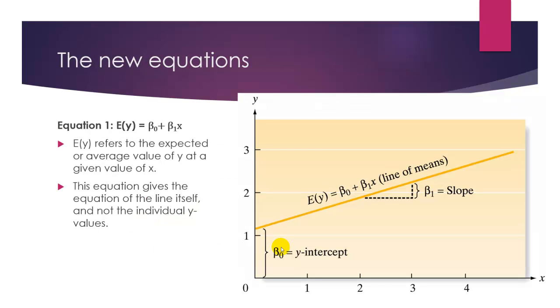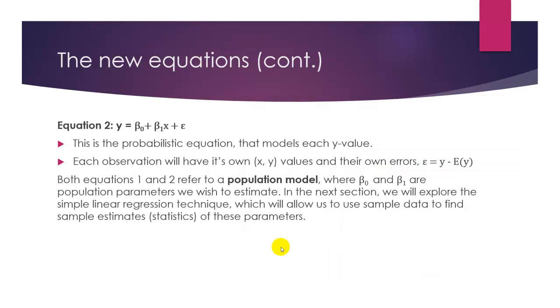Symbolically, we can discuss the deterministic relationship that models y based on x for a population by replacing y, which would represent each of the individual shoe sizes, with the expected value or average value of y. We write this as E(y).